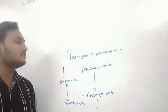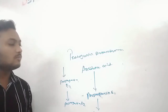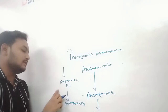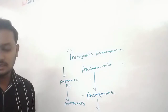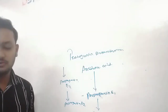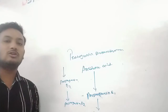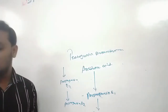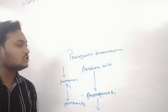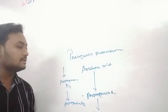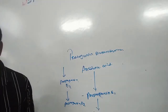The first substrate of the fungal transformation is arachidonic acid. It is converted into prostaglandin E1, then to prostaglandin E2, and the final product is prostaglandin F2. Different types of fungal species convert arachidonic acid into these different prostaglandins in a successful biotransformation of this molecule.